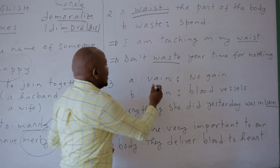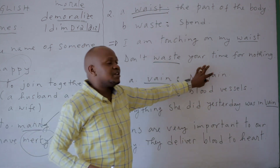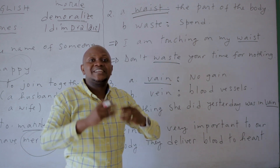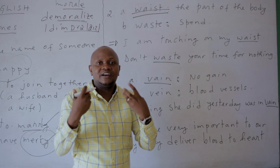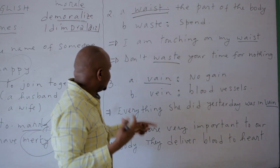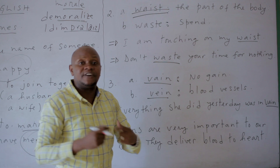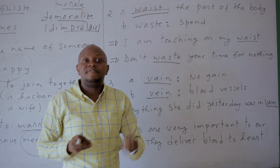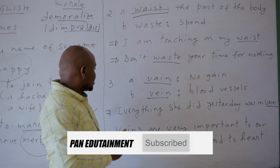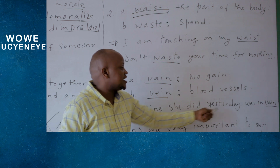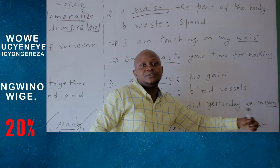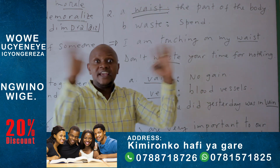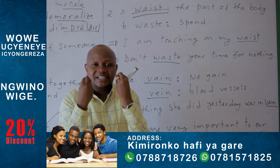Then we have the word 'Vain,' which means no gain. If you do something in vain, it means there is no gain. And we have 'Vein,' meaning blood vessels. For example: everything she did yesterday was in vain — it was in vain, no gain, she didn't gain anything.